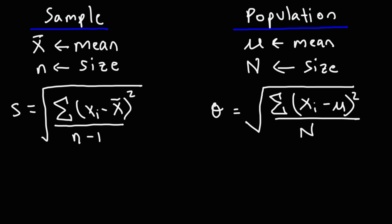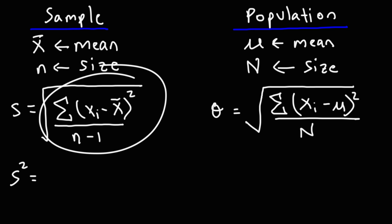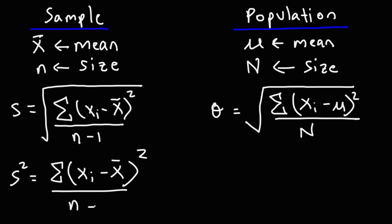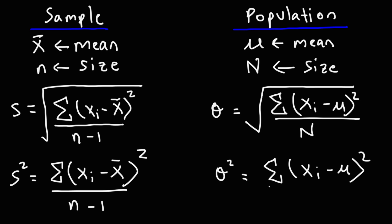Variance is the square of the standard deviation. The sample variance is everything in the sample standard deviation formula but without the square root. The population variance is the square of the population standard deviation — everything in that formula without the square root symbol.